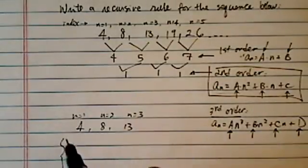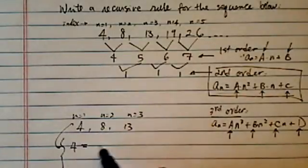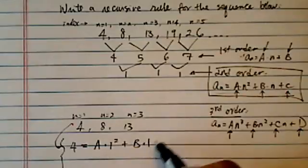So my equations is going to be 4, this is n equal to 1. So 4 is equal to a times 1 squared plus b times 1 plus c.